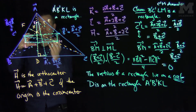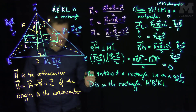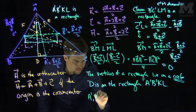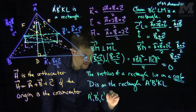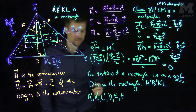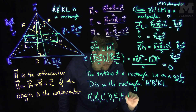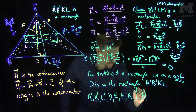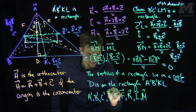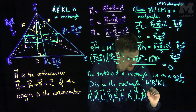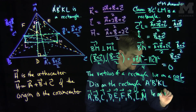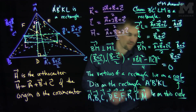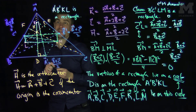By rotating this configuration, we can conclude that the points A', B', C', D, E, F, and K, L, M all lie on the same circle. This circle is called the nine-point circle.